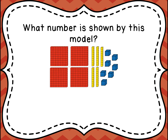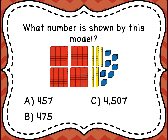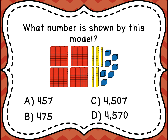What number is shown by this model? Is it A, four hundred fifty-seven; B, four hundred seventy-five; C, four thousand five hundred seven; or D, four thousand five hundred seventy? If you chose letter A, four hundred fifty-seven, you would be correct — because there are four in the hundreds, five in the tens for fifty, and seven in the ones for seven — four hundred fifty-seven.